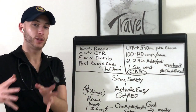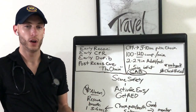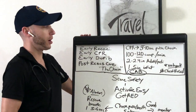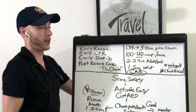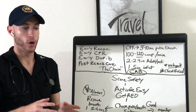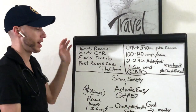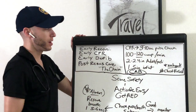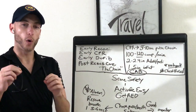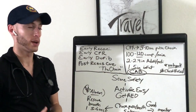When checking someone's pulse, do it for 5 to 10 seconds — no more than 10 seconds — and assess their breathing at the same time. Look at their chest and mouth to see if they're breathing. High-quality CPR is now 100 to 120 compressions per minute, with a goal of reaching 120. This is going to be a test question: the depth of compression is 2 to 2.4 inches for an adult and pediatric, and 1.5 inches for an infant.